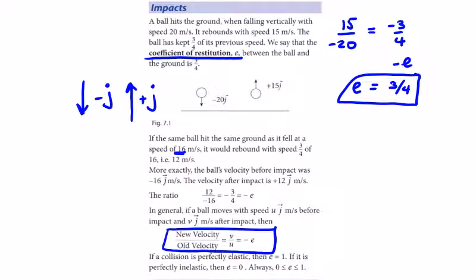In the second part of the example, if it was going 16, three quarters of 16 would be 12, so it would be going back up with 12j meters per second. Another thing to notice about e is that it's always between 0 and 1.